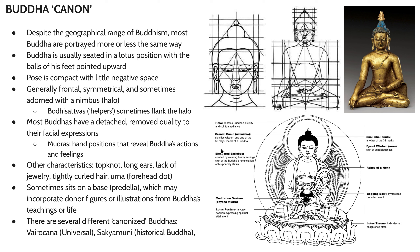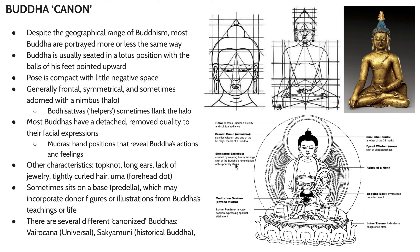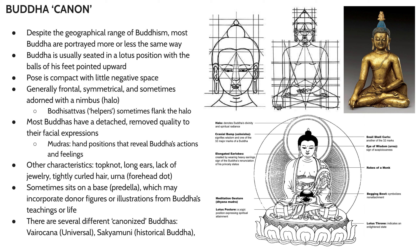A couple of other characteristics to note are the top knot and the cranial bump, which is often represented in the structure of the stupa. We have the urna, or the third eye of wisdom. We also have snail-shell curls — the Buddha is often represented with very tightly curled hair — and elongated earlobes, where the prince once wore heavy jewelry that weighed his ears down but no longer does. He's dressed relatively modestly, usually as a monk. Sometimes the Buddha sits on a base or predella that might incorporate patrons, donors, or didactic imagery showing important scenes from Buddha's life or teachings.